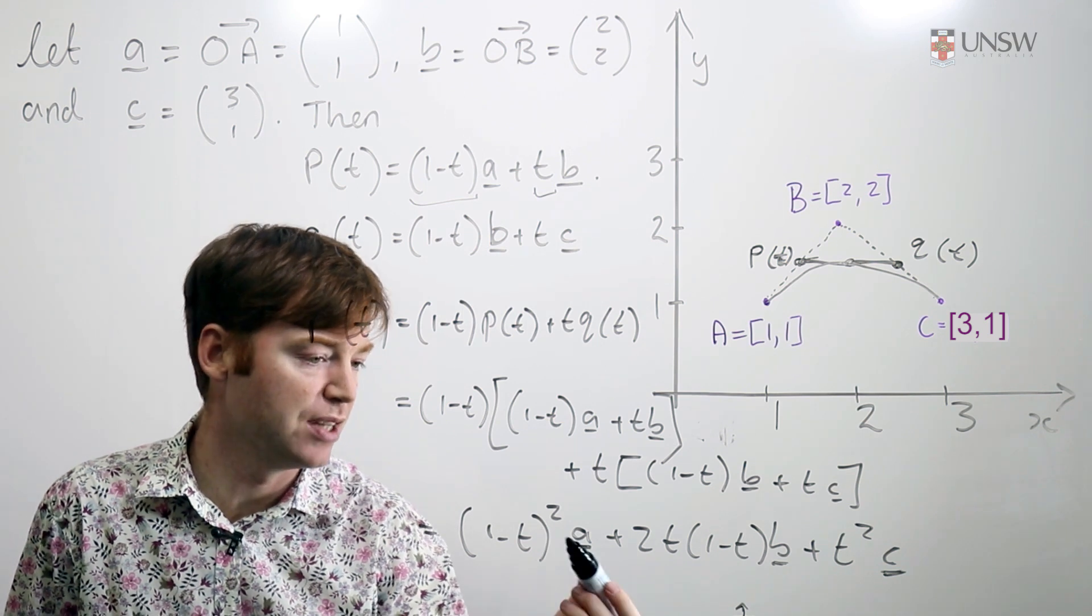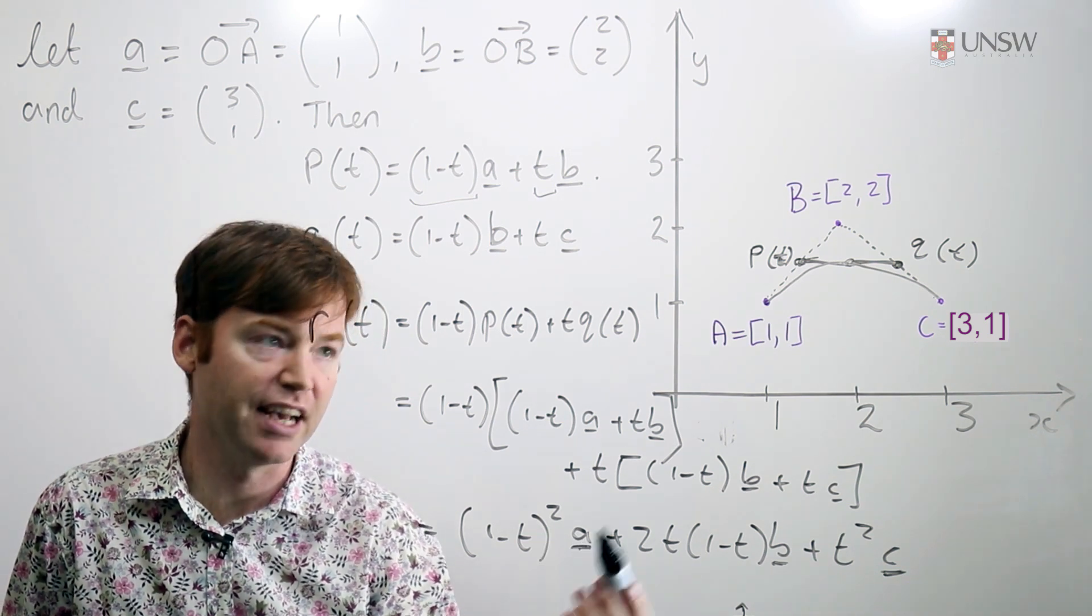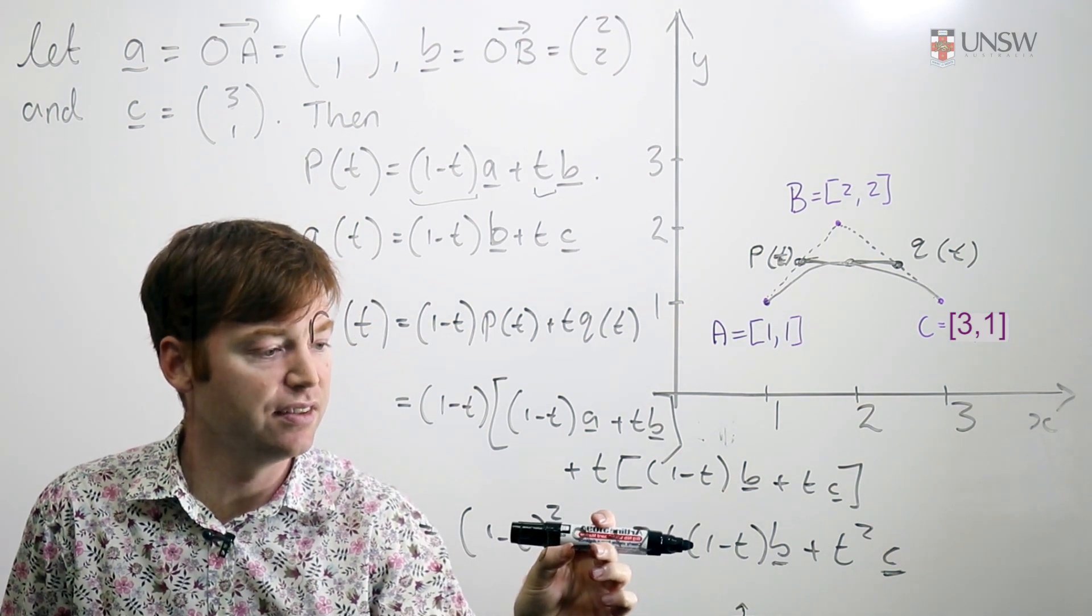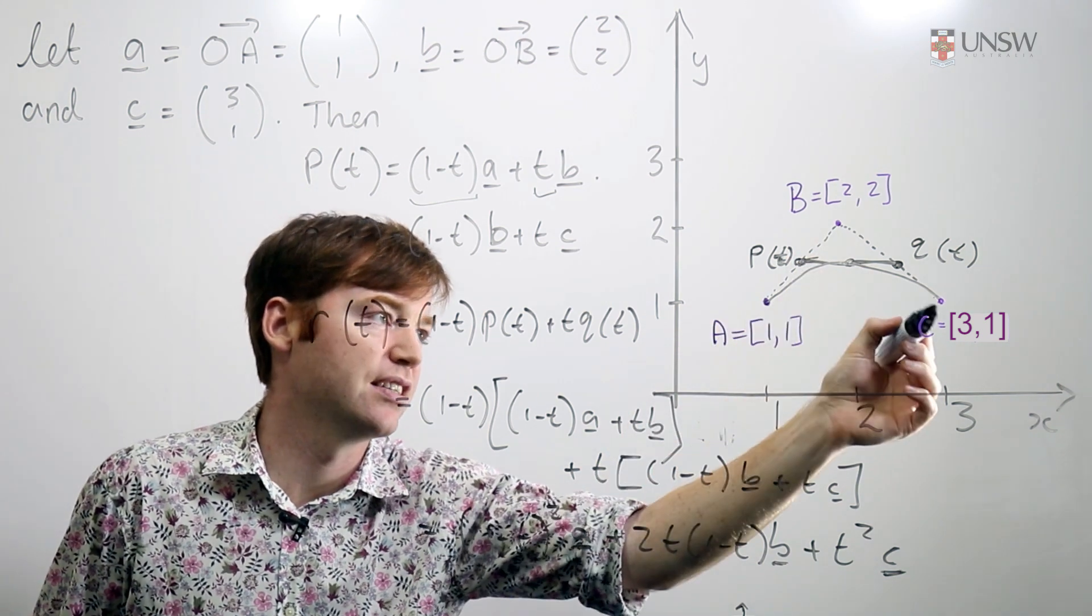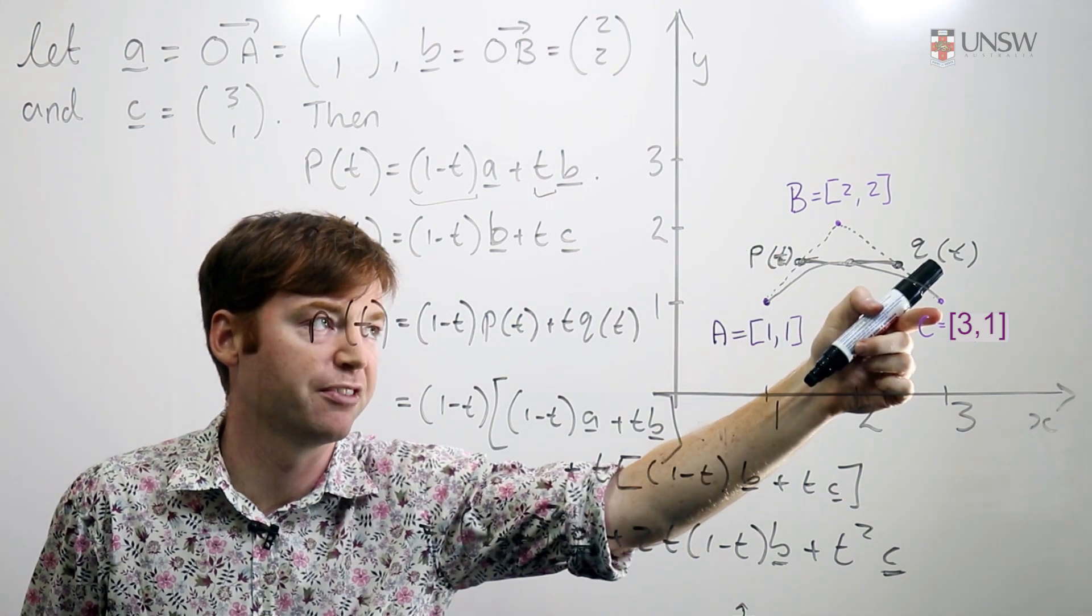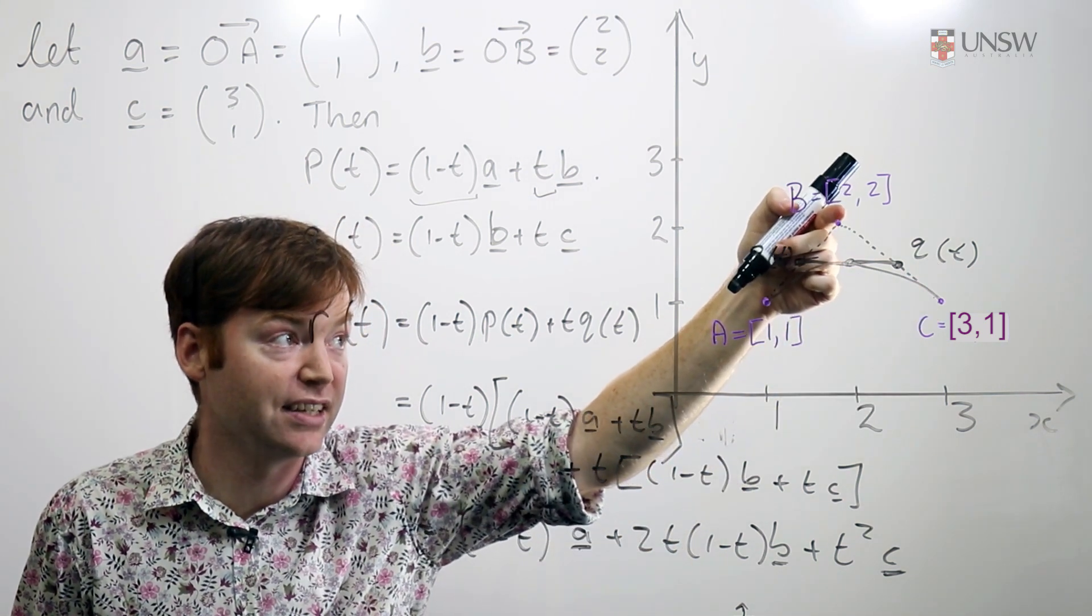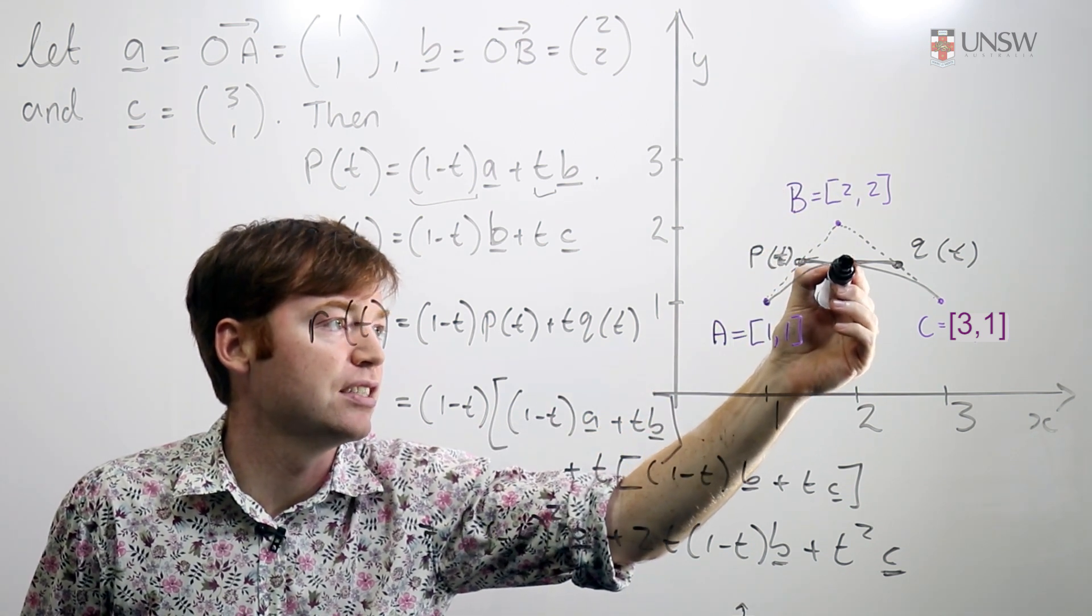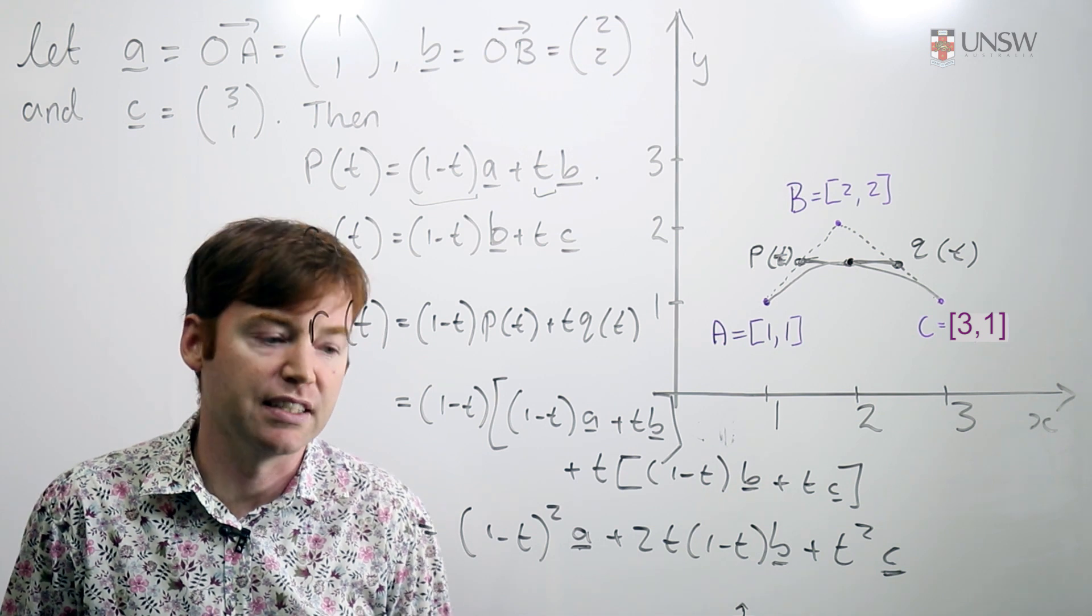As time goes from 0 to 1, initially all the weight is here at a and the curve is at a. When t is a half, you can think about it as weighting this triangle a, b, c. And when t is equal to a half, you put a quarter of the weight here, a quarter of the weight here, and a half of the weight here. And then the center of mass of this triangle is where the point r of t is.